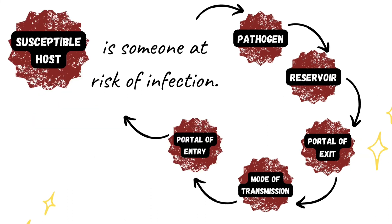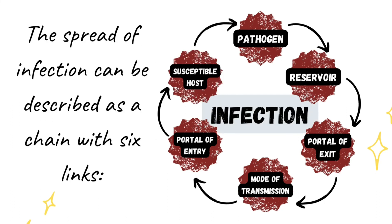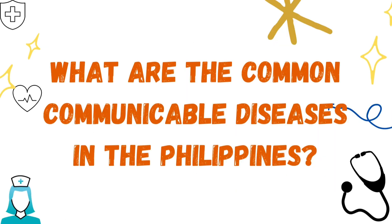The sixth link is the susceptible host. 'Susceptible' means easily affected, influenced, or harmed by something — so a susceptible host means someone at risk of infection. To recap, the six links of the spread of infection are: pathogen, reservoir, portal of exit, mode of transmission, portal of entry, and susceptible host.